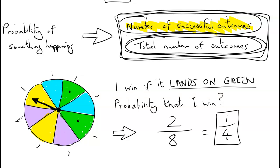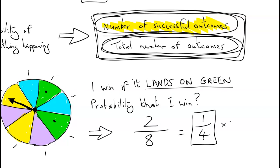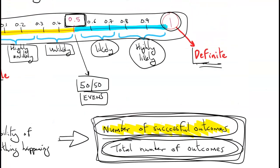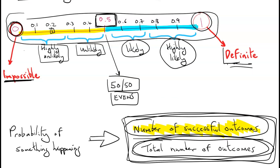If you wanted to turn it into percentage form you'd multiply by 100, giving you 25% — a 25% chance of winning. More relevant is turning it into decimal form to see where it fits on the probability scale. 1 over 4 as a decimal is 0.25, which sits between 0.2 and 0.3 on the scale — meaning it's unlikely that we will win this particular game.